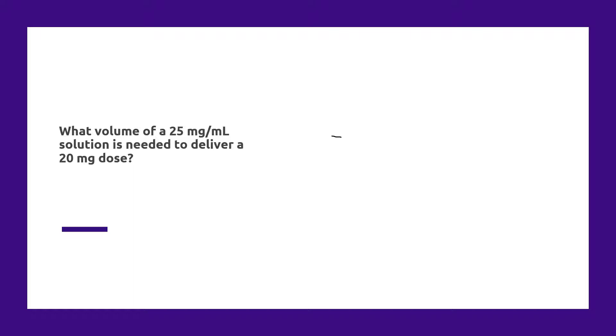I would solve this by setting up a proportion with our unknown information in the numerator on the right-hand side. So we need to know, and I'm assuming that they're asking for volume in milliliters, so how many milliliters per 20 milligram dose when our known concentration is 25 milligrams per milliliter?